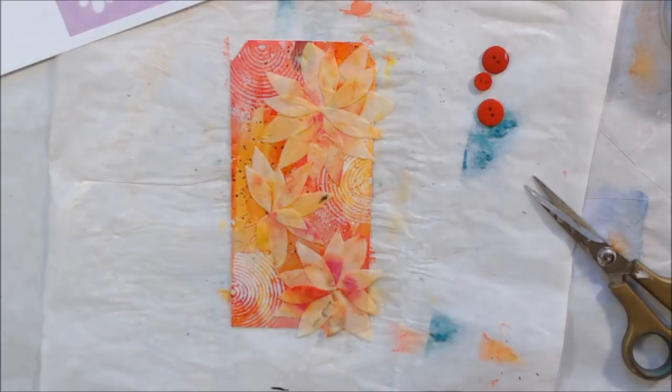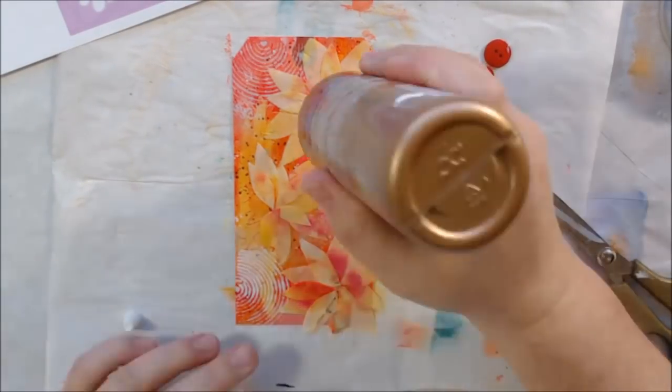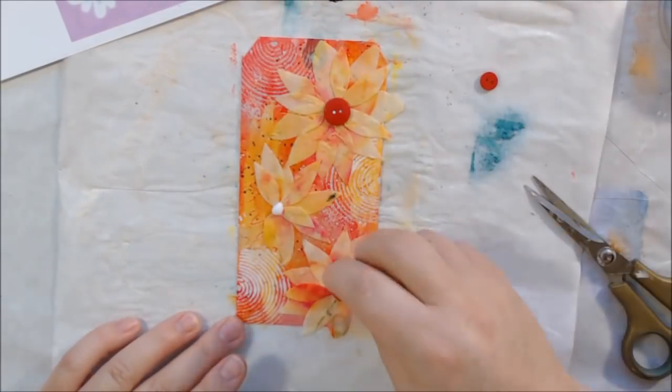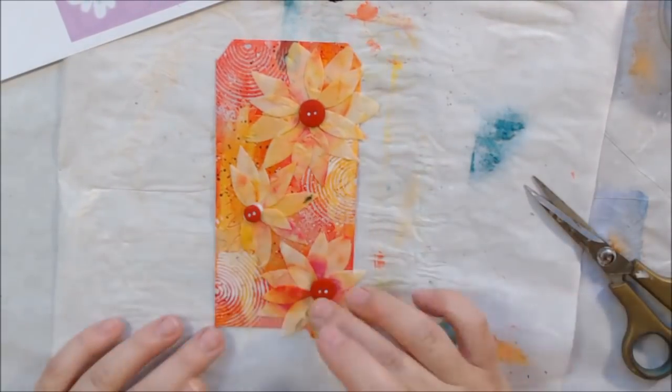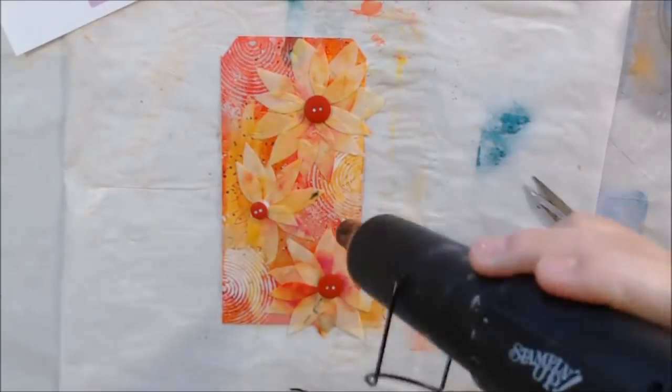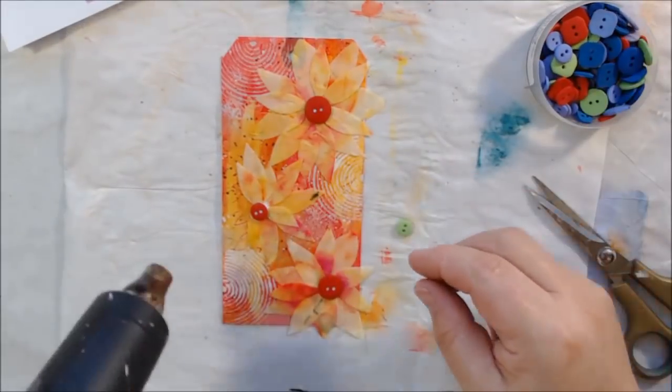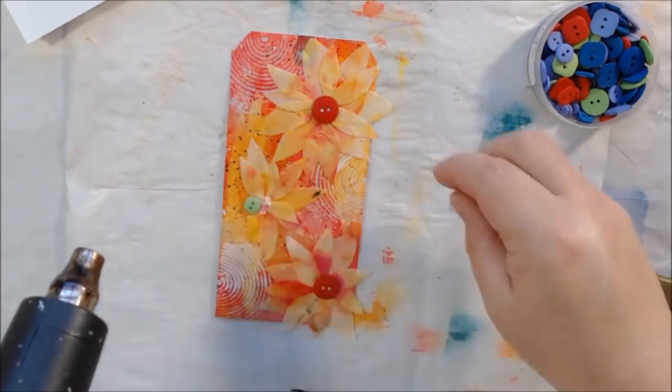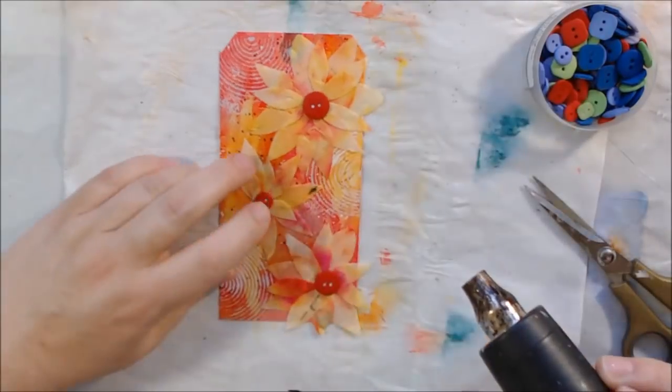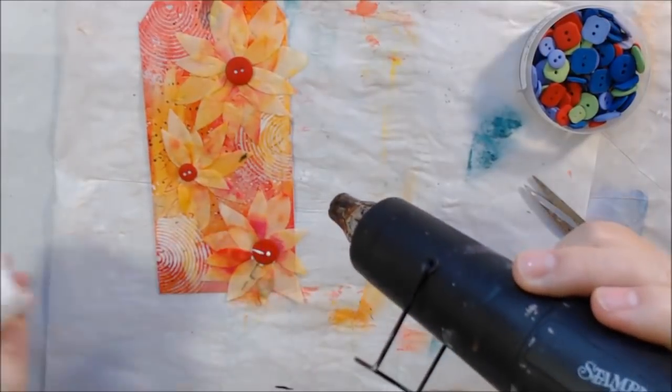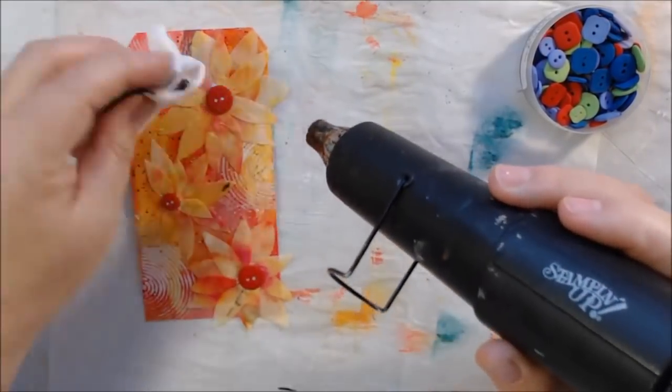Once I had it all stuck down with my matte medium, then I went ahead and glued on my buttons with some tacky glue. The one flower on the left is supposed to be kind of turned away rather than forward-facing, just to give the composition a little bit more fluidity and interest. I thought about making that one a green button, but one green button on there wasn't right, so I took it off.